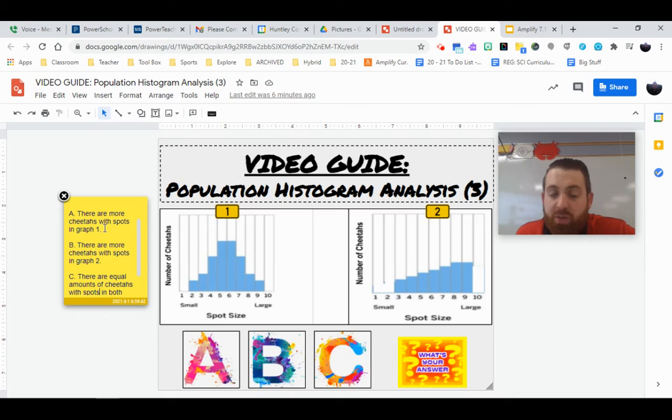There are more cheetahs with spots in graph one. We have more variation and the distribution for each of those traits is a lot higher, especially in four, five, six, and seven than anywhere else in graph two.